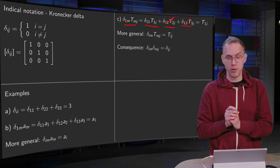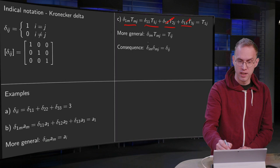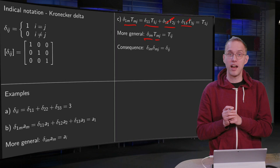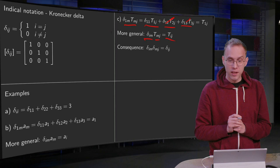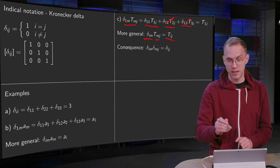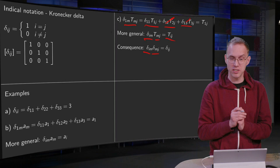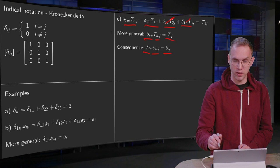More generally, if you compute delta im·tmj, you get to select the ith component, so you get tij over there. Now you can do this—you can replace tmj by delta mj, and then you have delta im·delta mj. What happens if you compute that? Similarly, you get delta ij. So that's the consequence of this line over here.